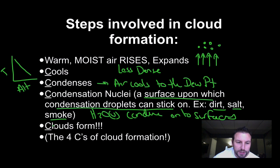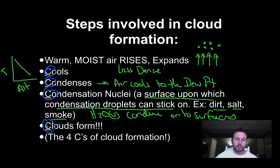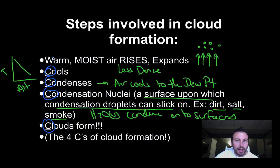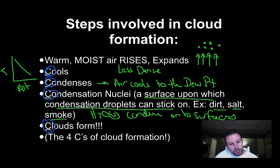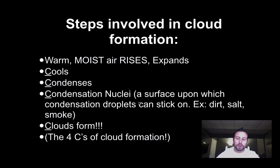These are basically your four C's of cloud formation: cools, condenses, around condensation nuclei, clouds form. Those are your steps in cloud formation. How we get warm air will depend on the specific heat of the land or water underneath. How fast it cools is really going to be dependent on the area and how fast it is rising. How much condensation occurs also depends on how much condensation nuclei is present in the area.